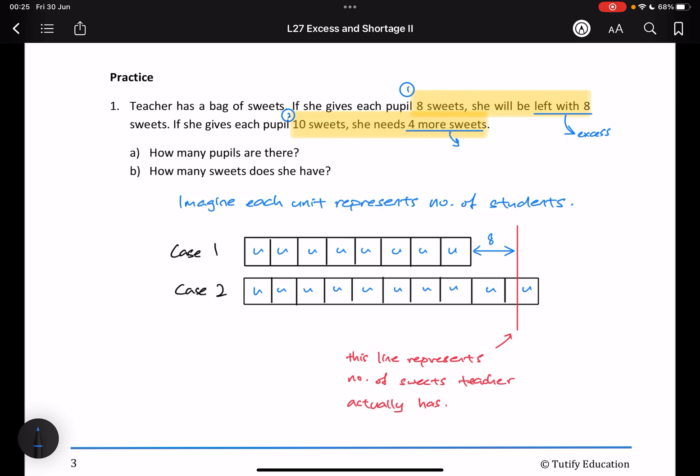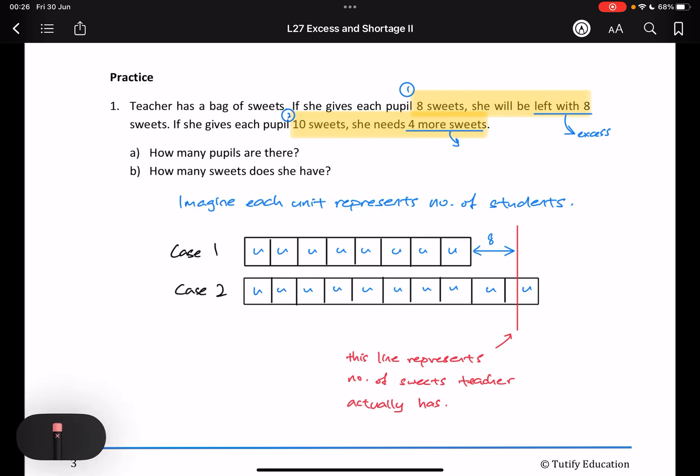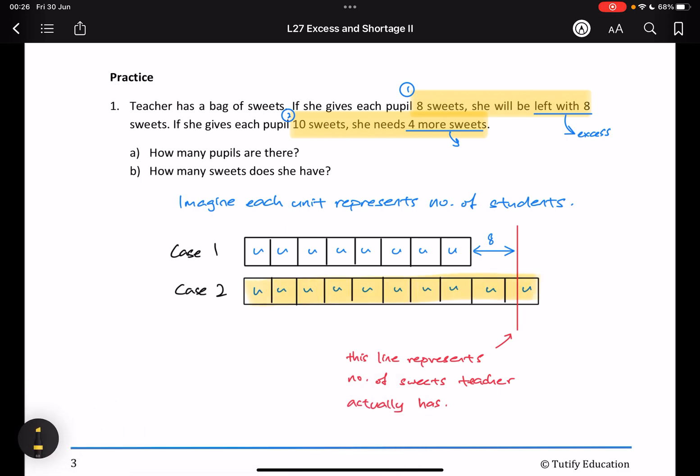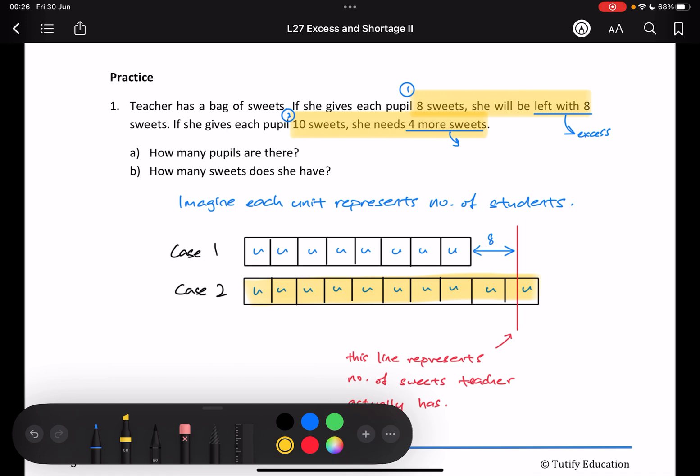I want to give ten sweets to each child. I will need ten units of sweets. But I don't have enough. You see, this is what I need. I need ten units of sweets. This is what I need. But I only have the red line. The red line represents the number of sweets I actually have.